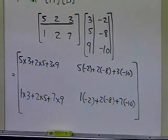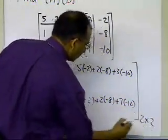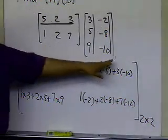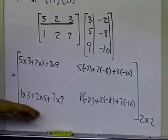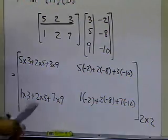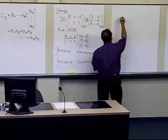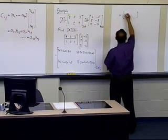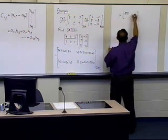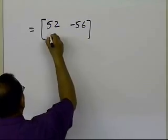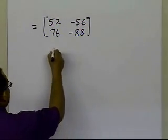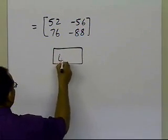I have calculated all the elements of the multiplication matrix. This is a 2 by 2 result because A is two rows by three columns and B is three rows by two columns. Performing the arithmetic, the resulting matrix C is [52, -56; 76, -88]. And that's the end of this segment.